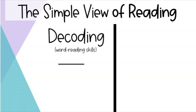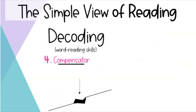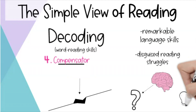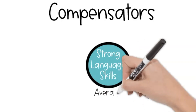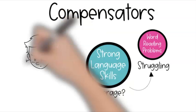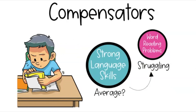The last category of struggling readers is the compensators. These students are tricky because they often fall under the radar and slip through the cracks. These are students who have remarkable language skills but disguised reading comprehension and word-level reading struggles. Their vocabulary and language skills are so strong that they can guess words and fill in the gaps while reading, even though they're struggling to decode. This type of reading requires a lot of brain power to guess and fill in the gaps, which doesn't leave as much brain power for higher-level reading comprehension. Their strong language skills make it seem as though they're having average reading comprehension, when in reality they're actually struggling. These students often do fine in the lower grades, but as text gets harder and their peers grow faster, they will struggle in the higher grades. So it's important to identify them and help them early.